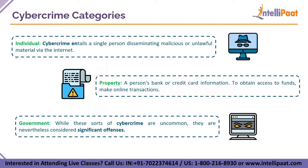The next cybercrime category is Property. This is similar to a real-life scenario of a criminal illegally processing an individual's bank or credit card information. Criminals use people's bank details to gain access to their funds, conduct online transactions, or carry out phishing schemes to persuade people to give up their personal information. They could also use malicious software to gain access to a web page with confidential information.